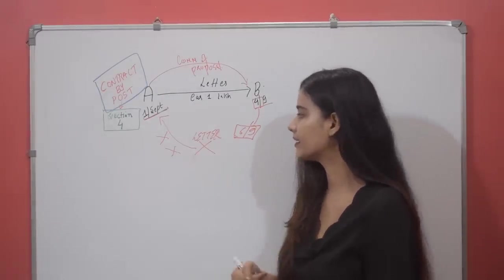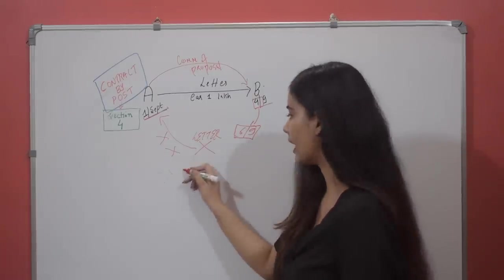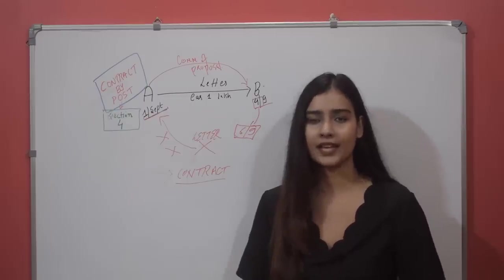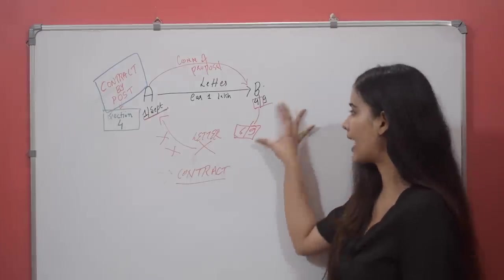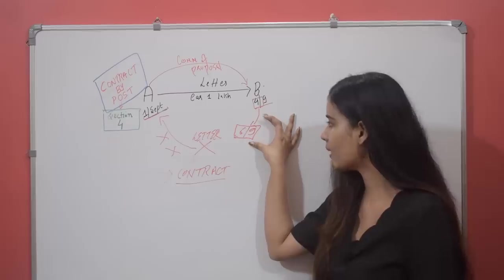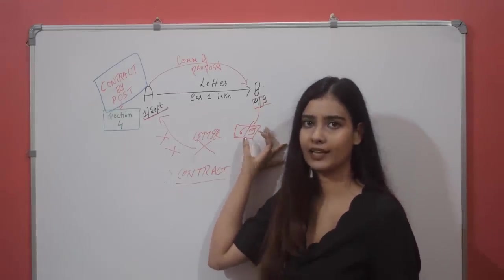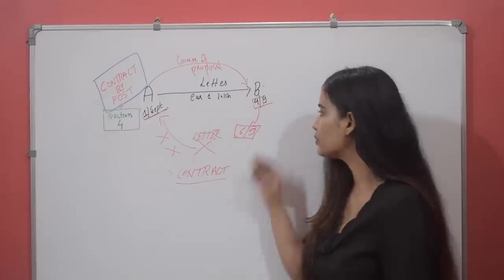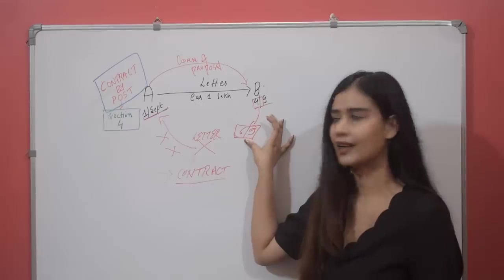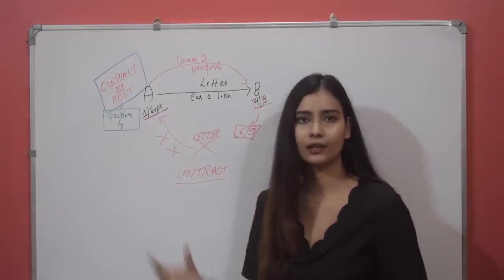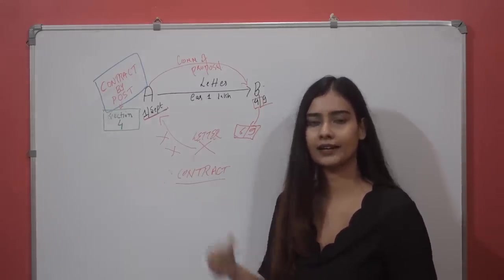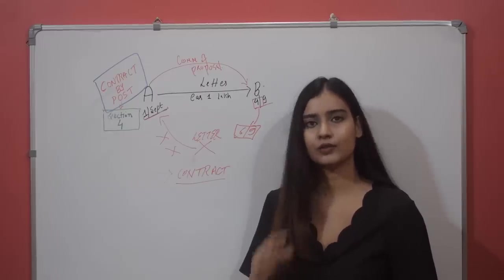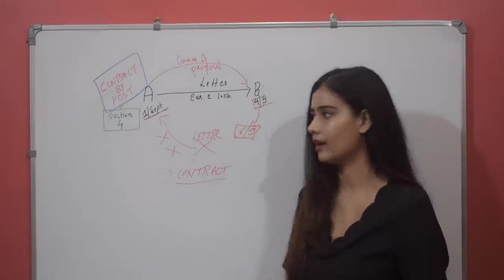In this case, there is a concluded contract. The contract was concluded. Why? Very simple reason: according to Section 4, the contract is concluded for the proposer at the moment when the letter of acceptance is posted. As soon as you post the letter of acceptance, the contract is formed. The same applies in English law — as soon as the letter of acceptance is posted, the contract is concluded. In Indian law too, for the proposer A, as soon as the letter of acceptance is posted by B, the contract is concluded. So even if the letter was lost, the contract was concluded — because according to Section 4, as soon as the letter of acceptance is posted, the contract is concluded.